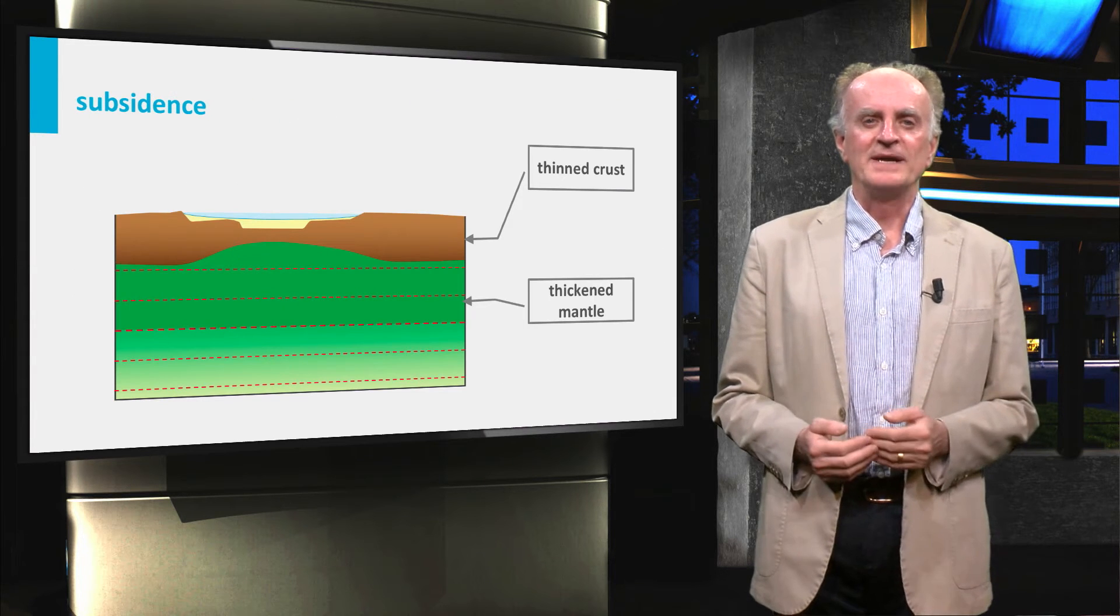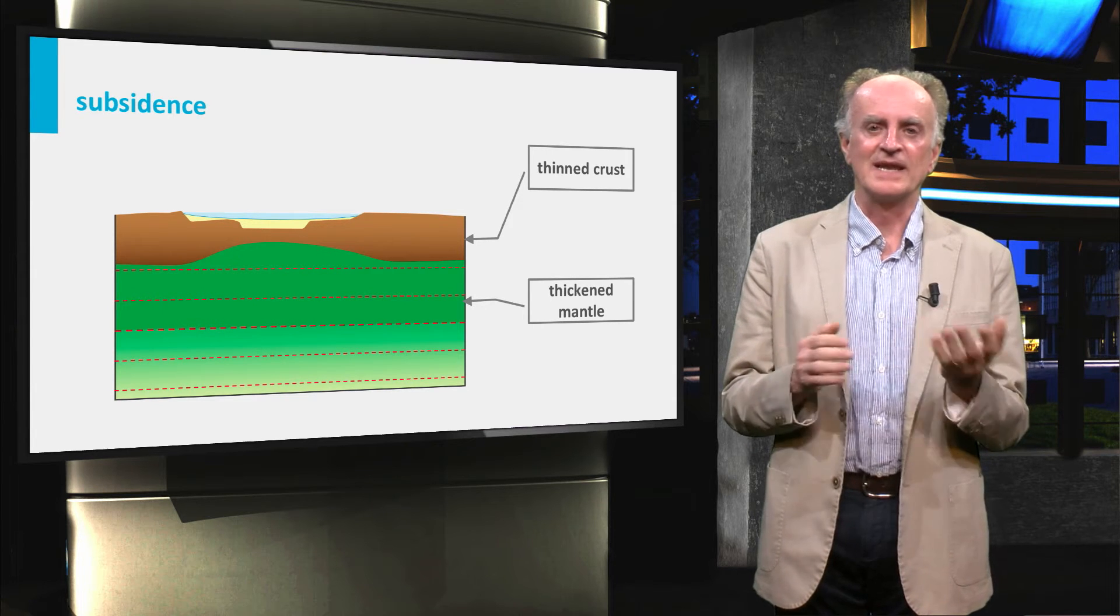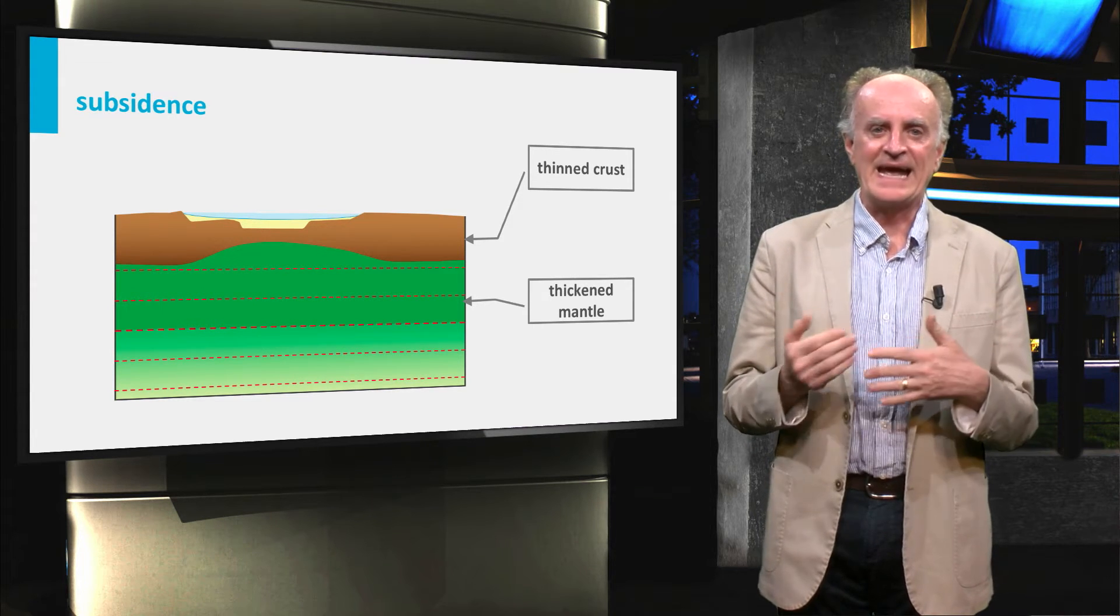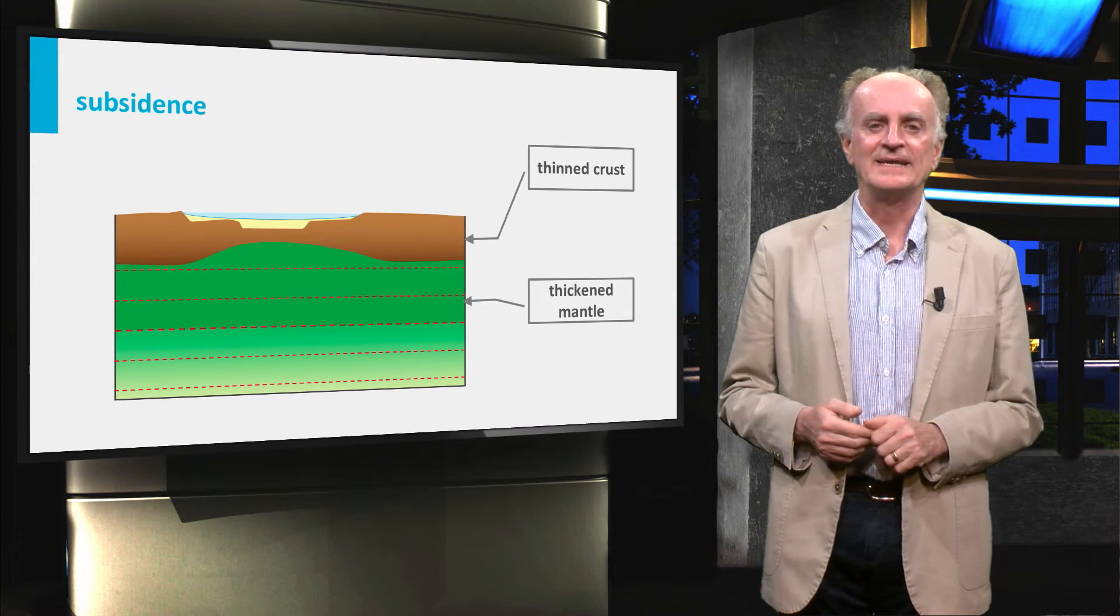Building on Archimedes' principle, we have seen that subsidence can be generated by thinning the crust, which is the light part of the system, and is enhanced by thickening of the mantle, which is characterized by its high density.